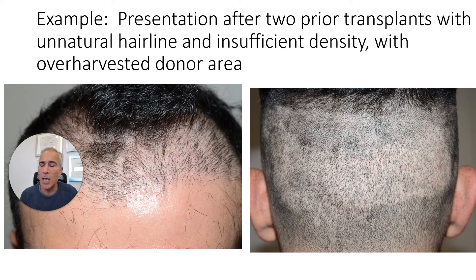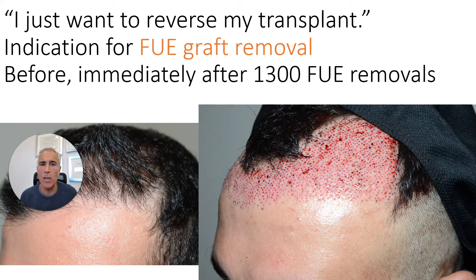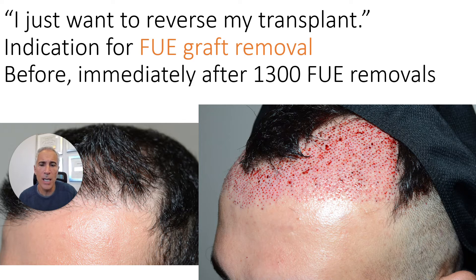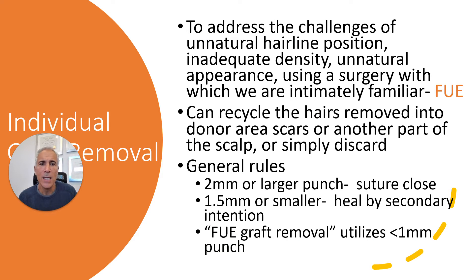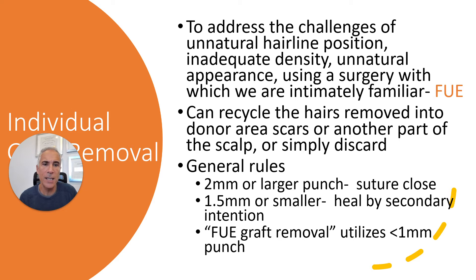Here's an example patient with an unesthetic hairline transplanted elsewhere and a somewhat depleted donor area. The decision was made — because he said he just wanted to reverse his transplant — to do FUE graft removal. This is before and immediately after 1,300 removals. The technique of individual graft removal addresses challenges of unnatural hairline position, inadequate density, and unnatural appearance, using a surgery with which we are intimately familiar: FUE.